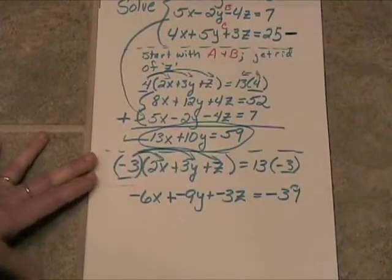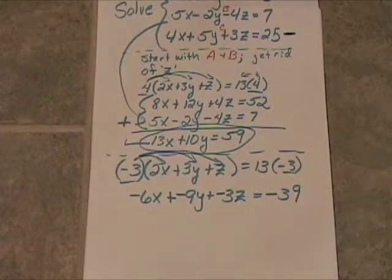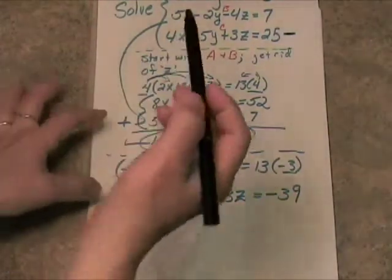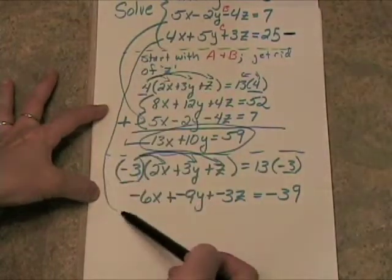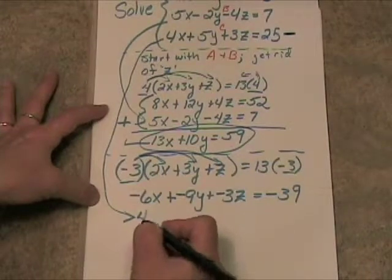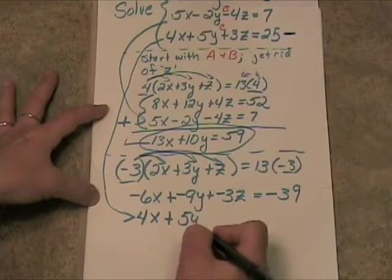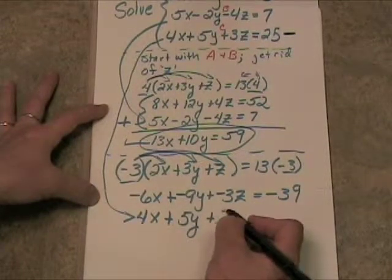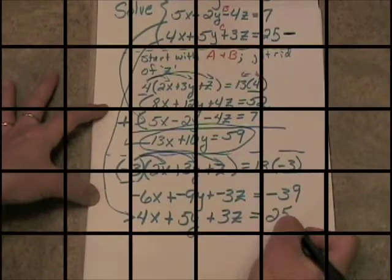So now we have an altered equation A and directly underneath that we will rewrite equation C again. We'll bring this down here, put it underneath. So that will be four x plus five y plus positive three z is equal to twenty five.